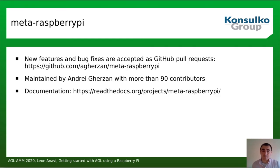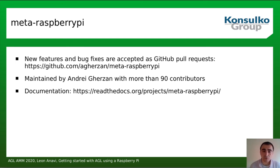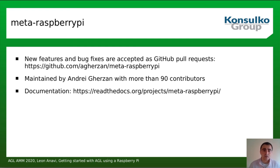Another important variable for AGL is 'VC4DTBO', which must be set to 'vc4-fkms-v3d'. This is needed to support Wayland/Weston and apps on both HDMI monitors and the official Raspberry Pi 7-inch touchscreen display. meta-raspberrypi is hosted on several locations, but to submit a new feature or bug fix you should do so as a GitHub pull request. The layer is maintained by Andrei Gherzan with more than 19 contributors including myself — this is one of my favorite BSP layers in the Yocto/OpenEmbedded ecosystem and it's very well maintained. Documentation for meta-raspberrypi is available at ReadTheDocs.org.